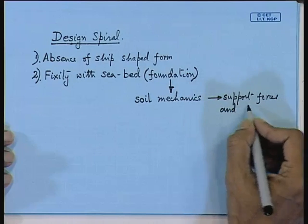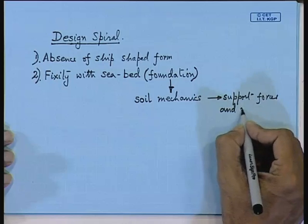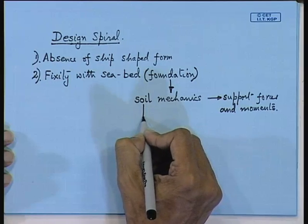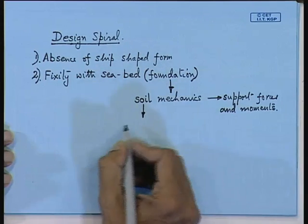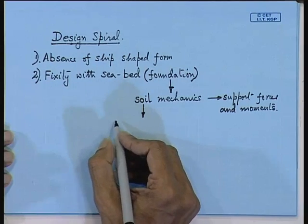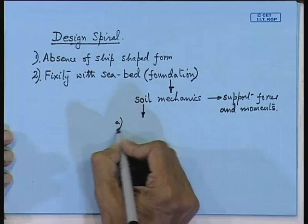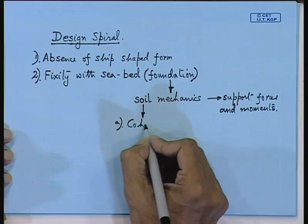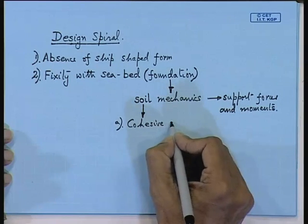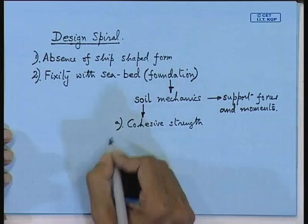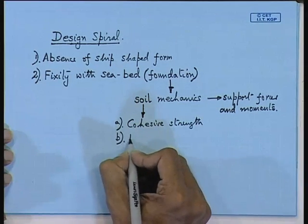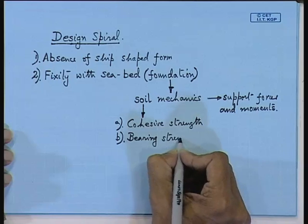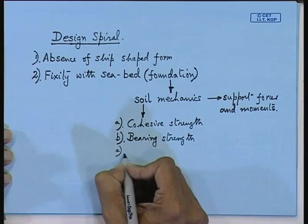This is another area of departure from normal ship calculations. In soil, you should know the most important characteristics: cohesive strength, bearing strength, and shear strength. These aspects are found from laboratory experiments.